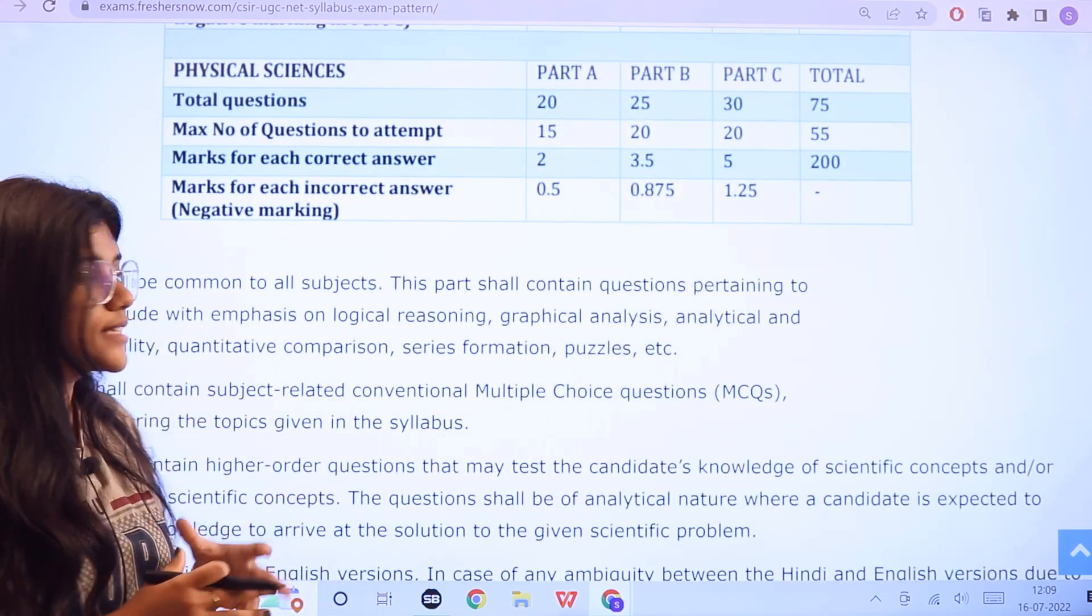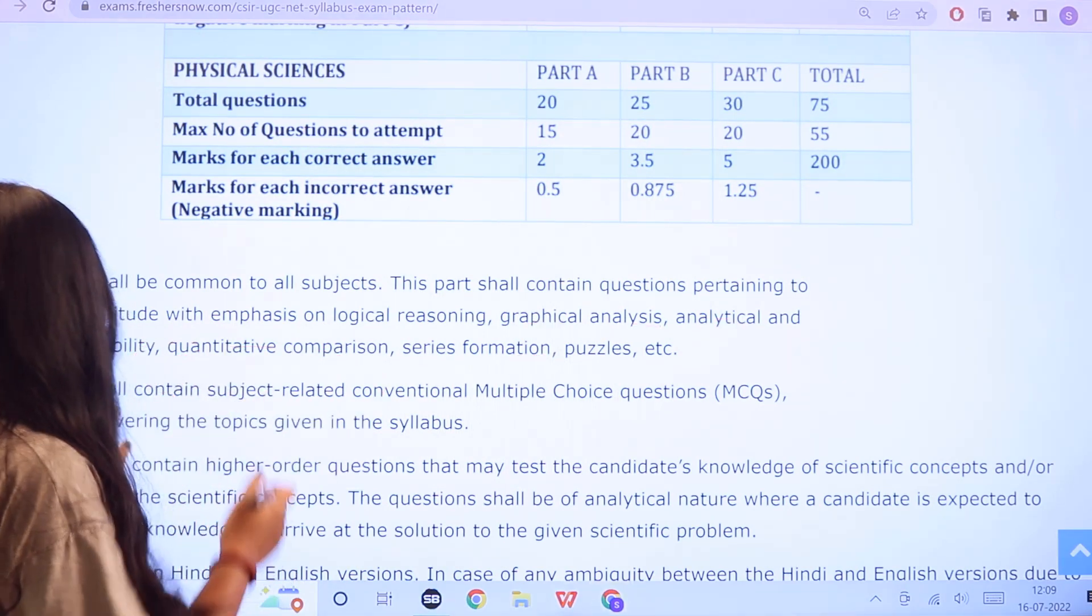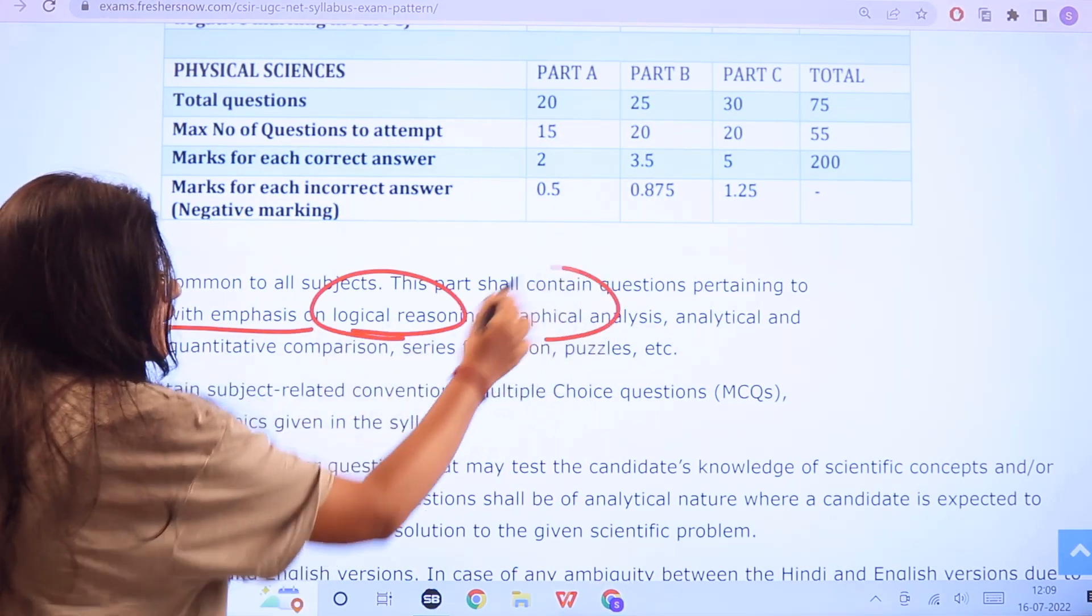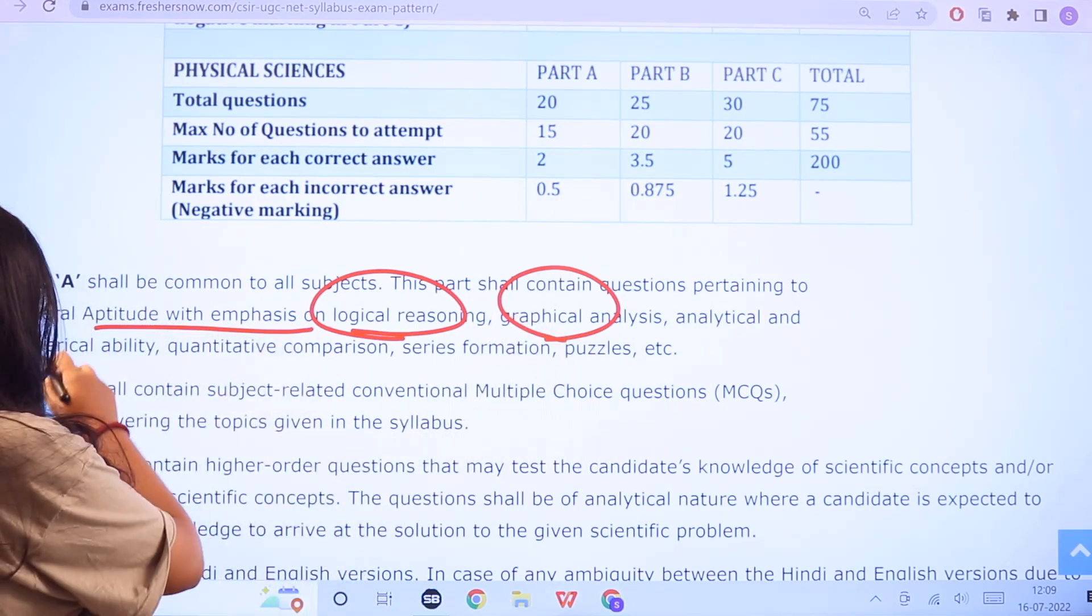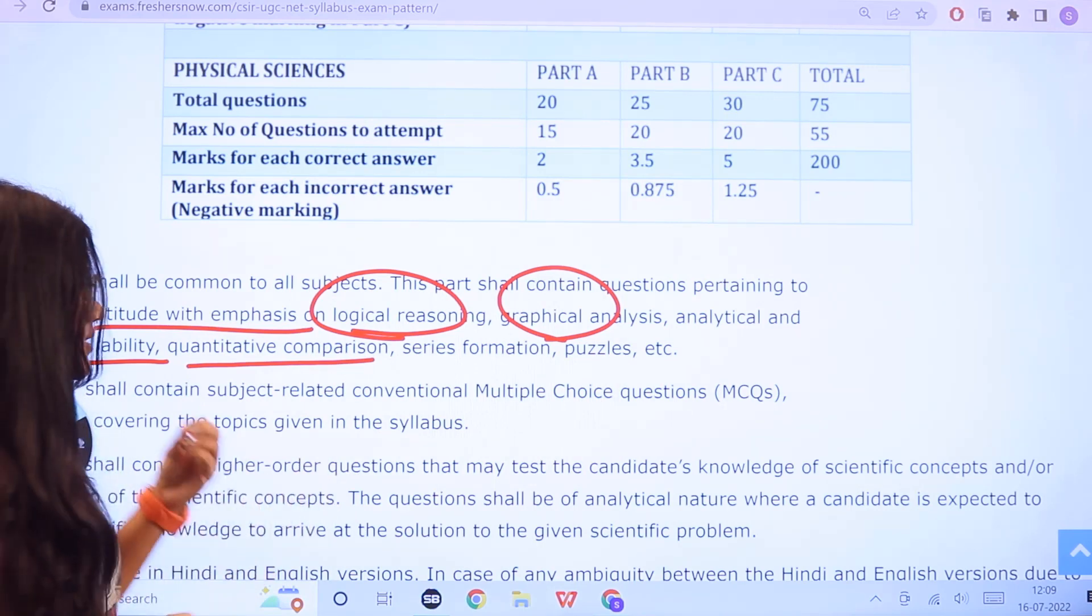Now part A is considered to be common under all the subjects. The questions would be on general aptitude with emphasis on logical reasoning, graphical analysis, analytical numerical ability, quantitative comparisons, series formations, puzzles, etc.